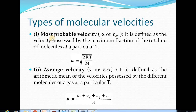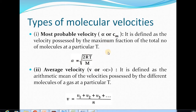The first one is most probable velocity, denoted by symbol alpha or cm. This velocity is obtained from the maxima of the Maxwell distribution of velocity curve, and it is defined as the velocity possessed by the maximum fraction of the total number of molecules at a particular temperature T. The mathematical expression for alpha is the square root of 2RT divided by m, where R is the gas constant, T is the absolute temperature, and m is the molecular mass.